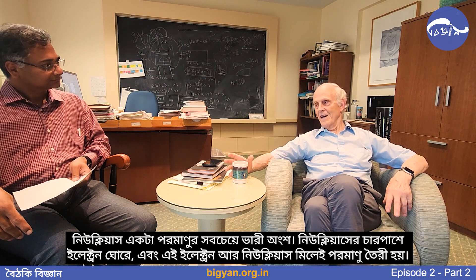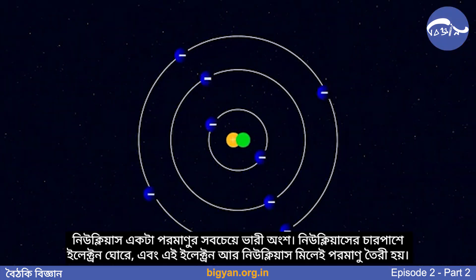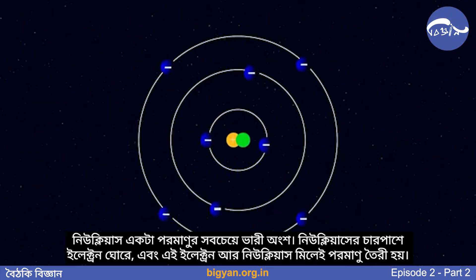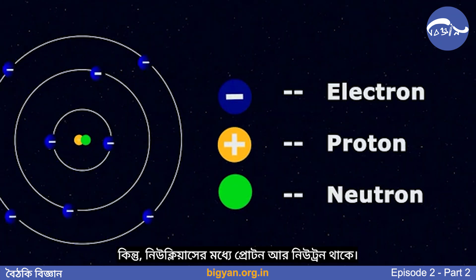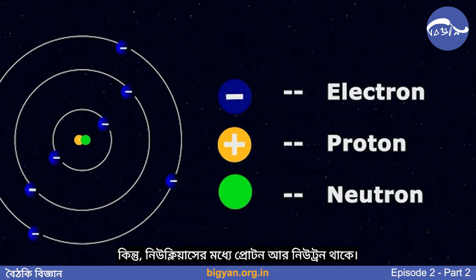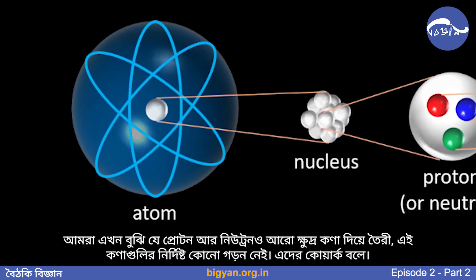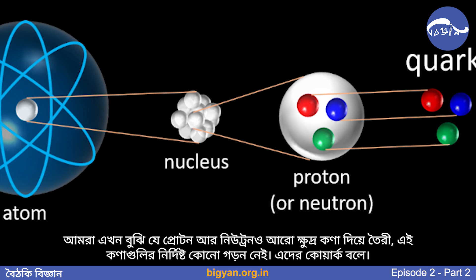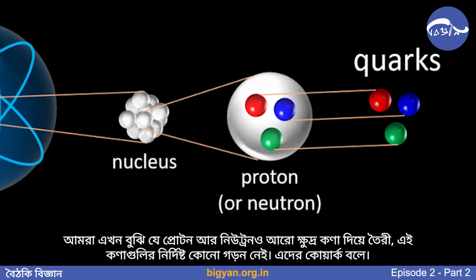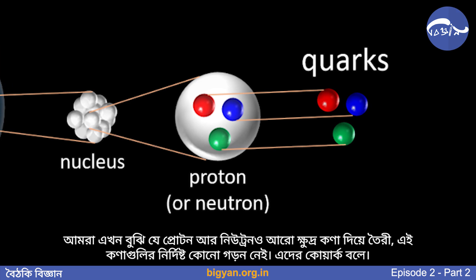So inside the nucleus of atoms, which is where most of the mass of the atoms are, there are also electrons that create atoms around the nuclei, but inside the nucleus one finds protons and neutrons. We now understand that those protons and neutrons are made out of constituents — basic elementary particles which have no structure as far as we can tell.